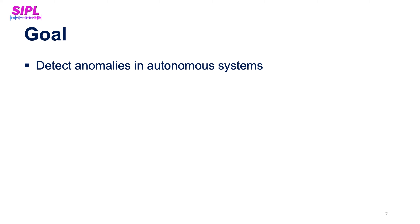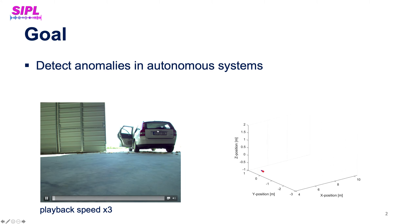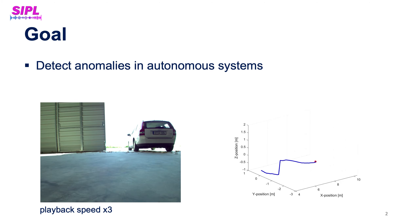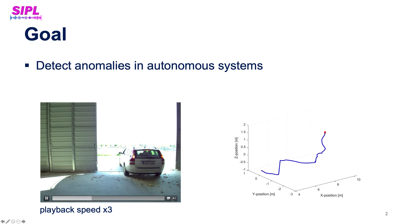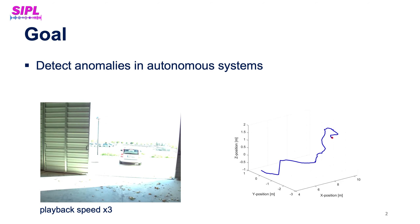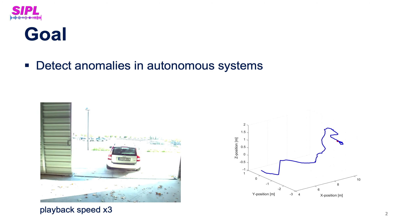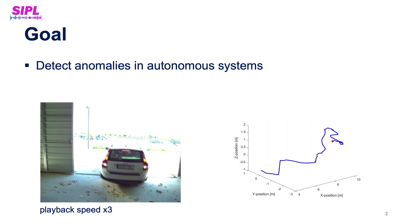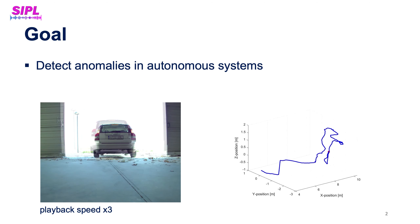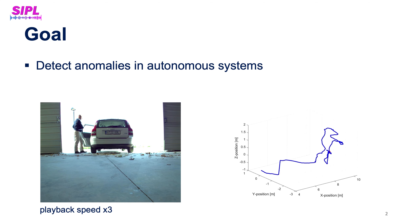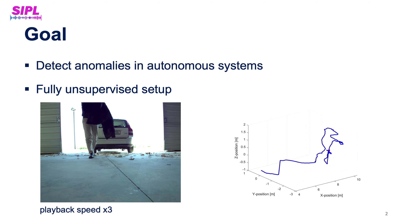Our goal was to detect different types of anomalies in autonomous systems such as drones or autonomous vehicles. We see here an example of drone data provided in the competition. To the left we have the video taken by the drone and to the right the drone flight trajectory during the shooting. The setup of the competition is completely unsupervised, which means that data labels cannot be used at all.